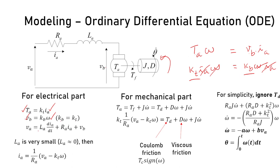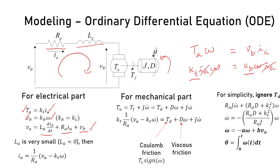For the electrical part, applying Kirchhoff's Voltage Law gives the circuit equation. In many DC motors the inductance is very small, so we can ignore it. This simplifies the electrical equation considerably.